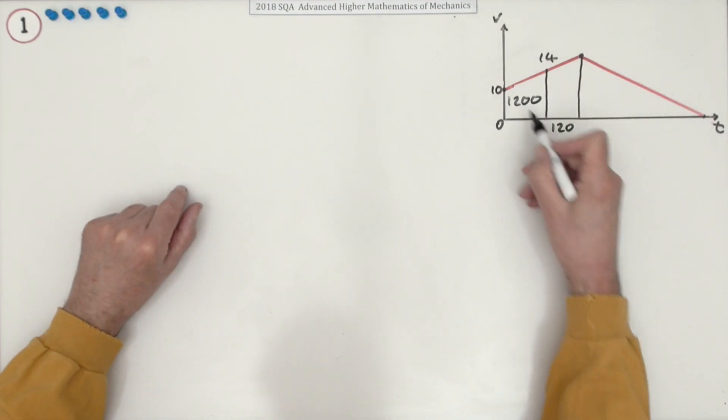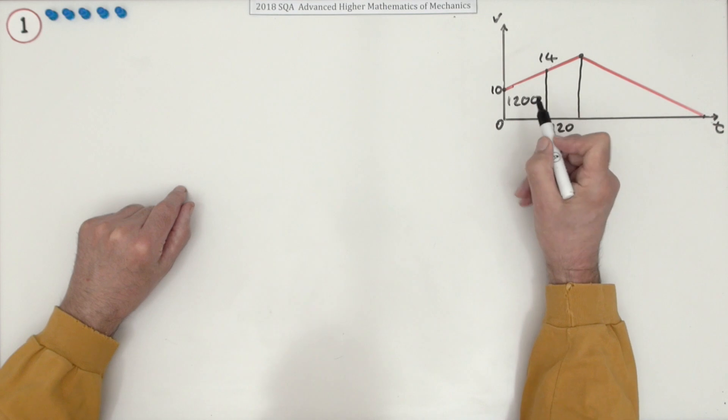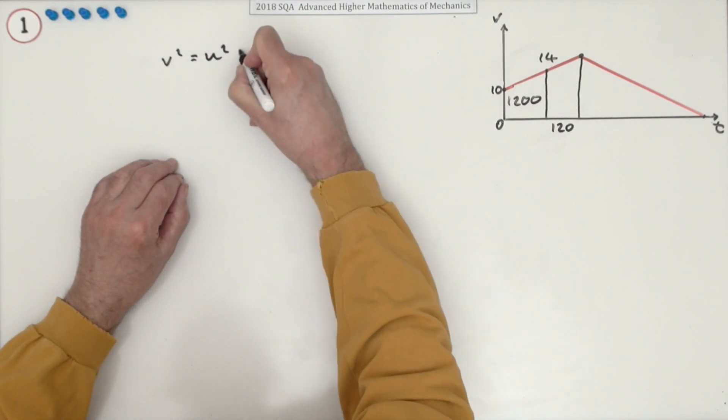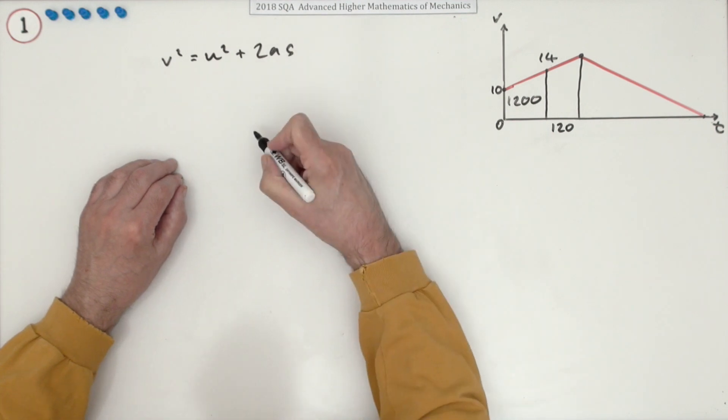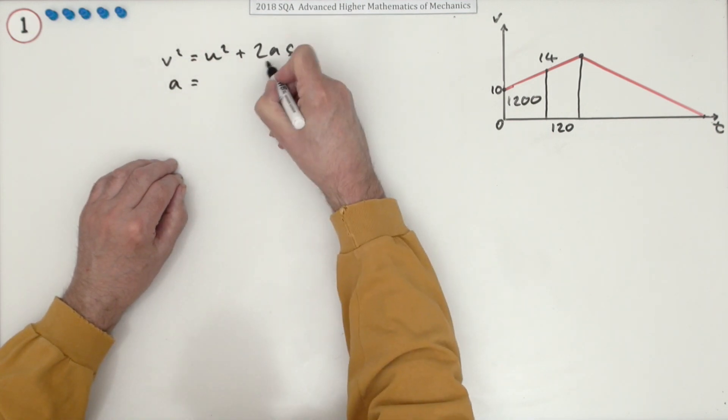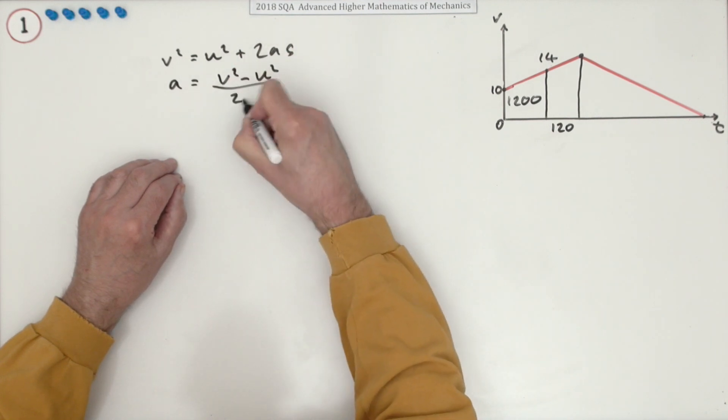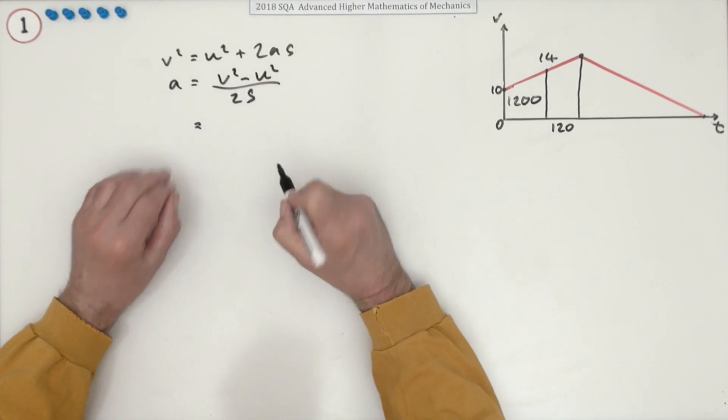So acceleration, I've got speeds, I've got a distance, so that will be v squared is u squared plus 2as. You could rearrange that to read 2as equals v squared minus u squared, so divided by 2s. Put in the figures.